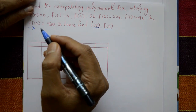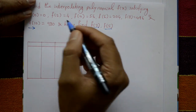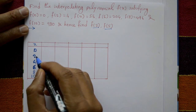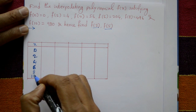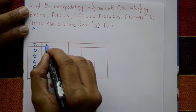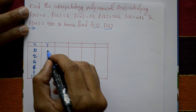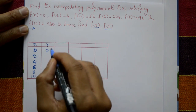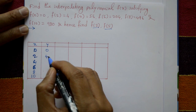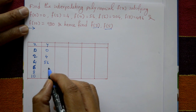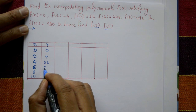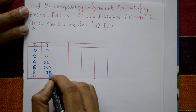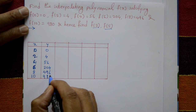Solution. The x values are 0, 2, 4, 6, 8, 10 and the y values are: f(0) = 0, f(2) = 4, f(4) = 56, f(6) = 204, f(8) = 496, and f(10) = 980.